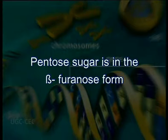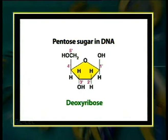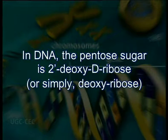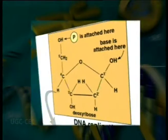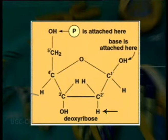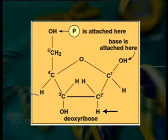In nucleotides, the pentose sugar is in the beta-furanose form, that is, in a closed five-membered ring. In DNA, the pentose sugar is 2'-deoxy-D-ribose, or simply deoxyribose, which is the reason for the name deoxyribonucleic acid. The oxygen atom present at the second carbon of ribose is missing in deoxyribose. Hence, it is named 2'-deoxyribose.